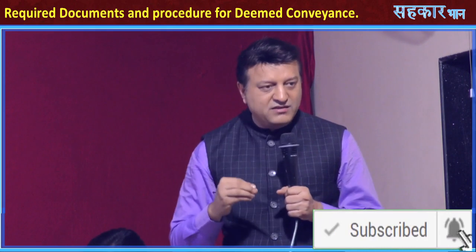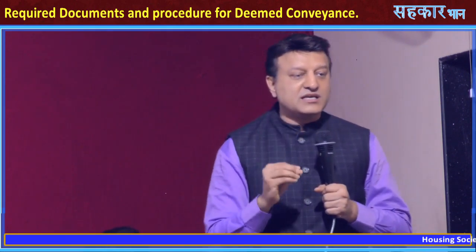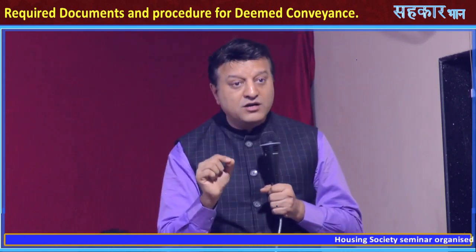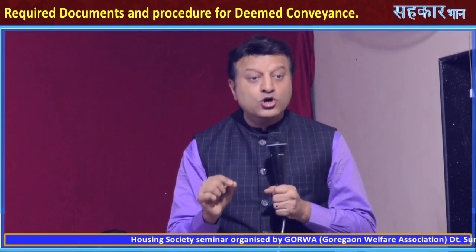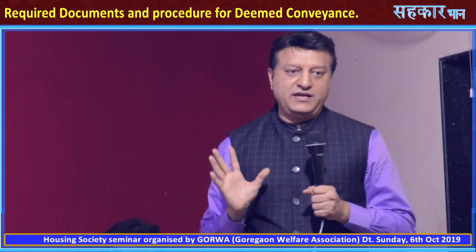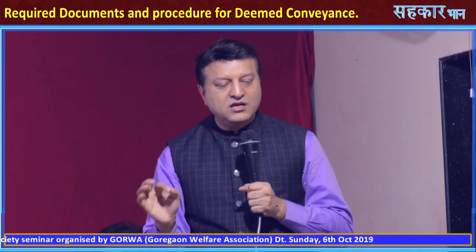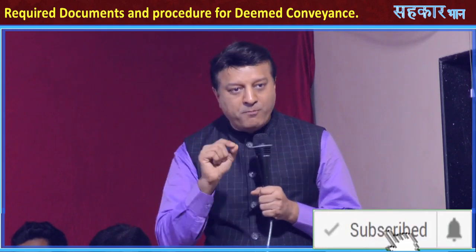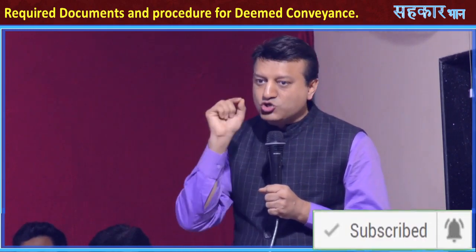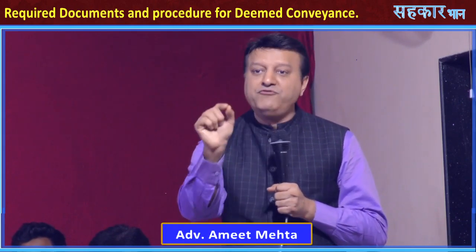After submitting Form 7, after a few weeks, you will get an intimation from the District Deputy Registrar (DDR). The DDR is the person empowered to sign on behalf of the landowner or landlord to convey the land to the cooperative housing society. Once Form Number 7 is uploaded, you get an intimation from the DDR called Form Number 8, which shows any objections in your application. You must comply with those objections within 15 days.